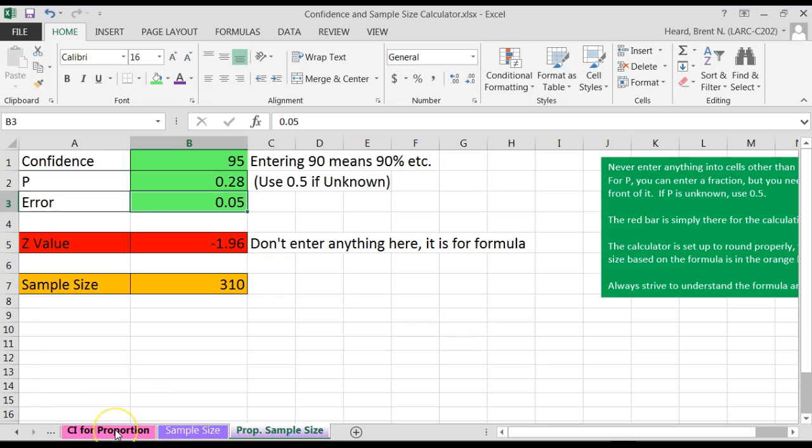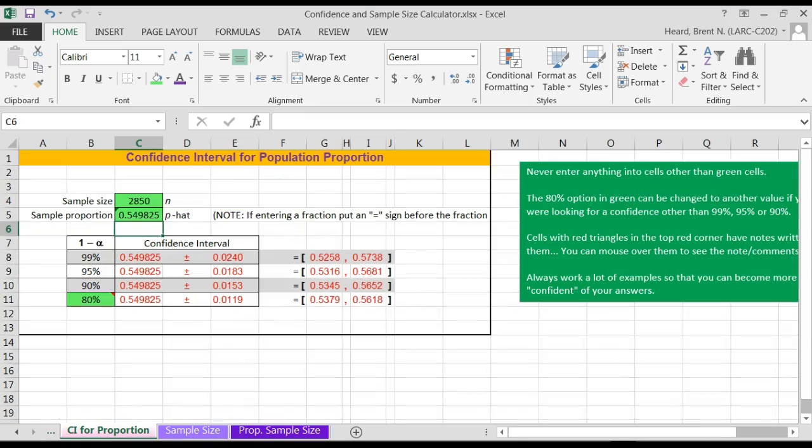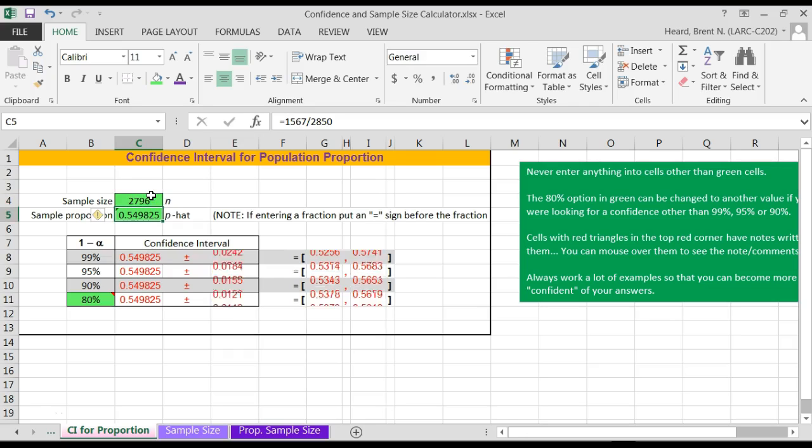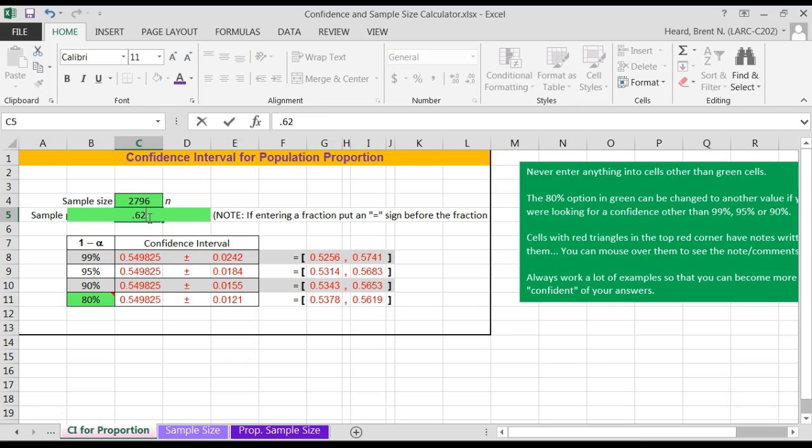Let's do this one. Down at the bottom, I'm going to click CI for proportion. How many people did I have in County A? Let me input this. It was 2,796. And there were 62%. So I'm just going to enter 62%, which is 0.62. They want a 95% confidence interval, 0.602 to 0.638.